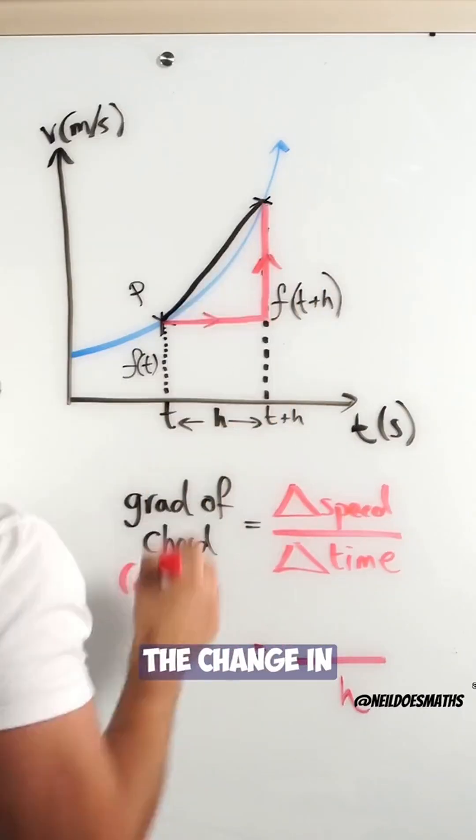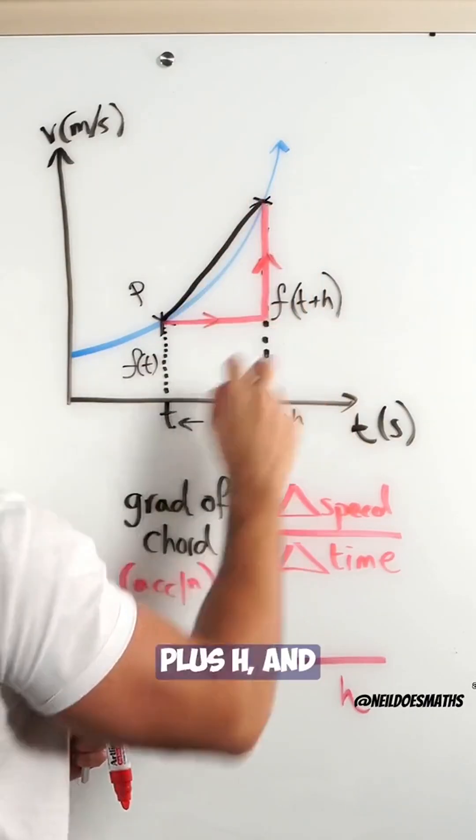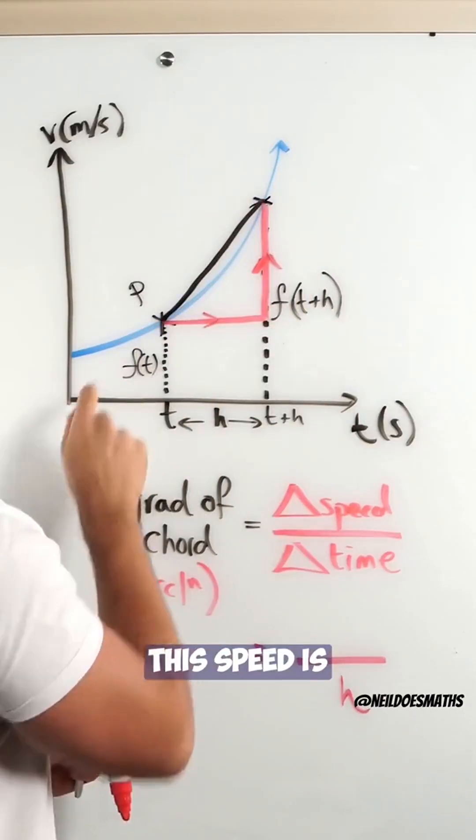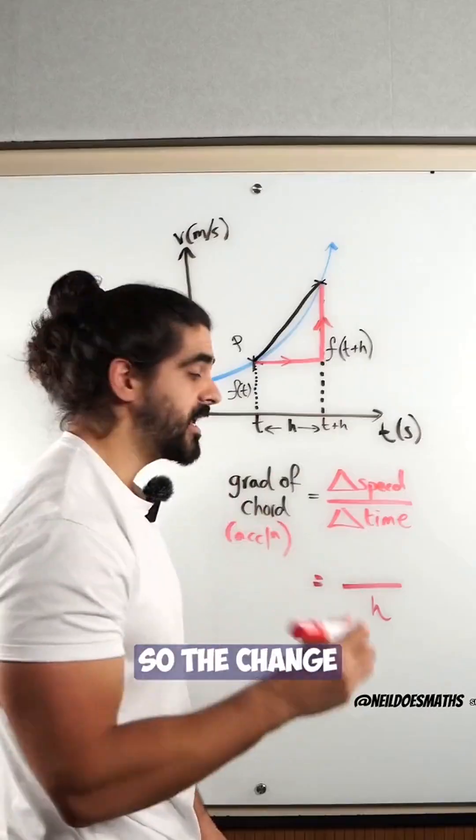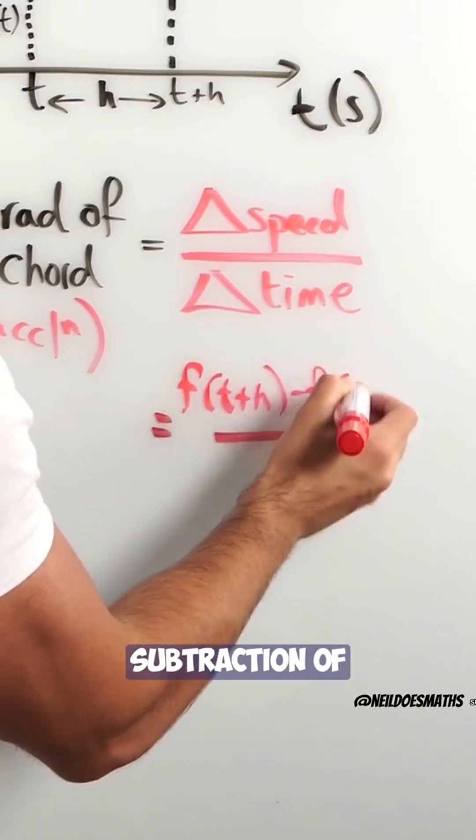And the change in speed - you can see this speed is the function of t plus h, and this speed is just the function of time. So the change is just the subtraction of the two values.